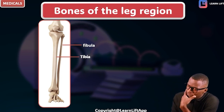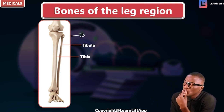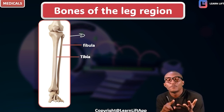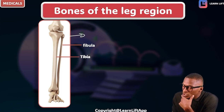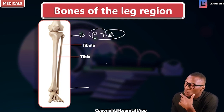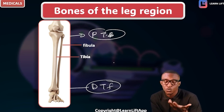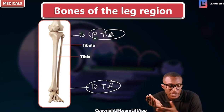There are two joints in the leg. The first joint is formed by the tibia and the fibula — these are the tibiofibular joints. The tibiofibular joint exists both proximally and distally. The upper one is the proximal tibiofibular joint, while the lower one is called the distal tibiofibular joint. We'll talk more about that when we get to joints.